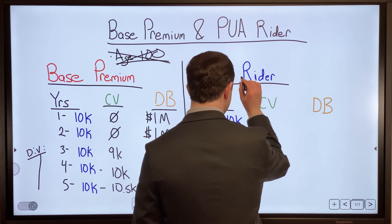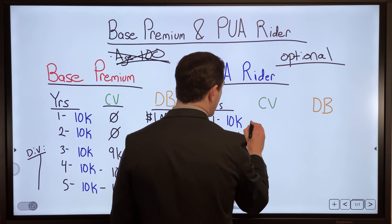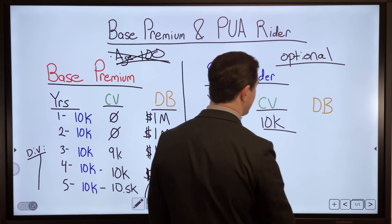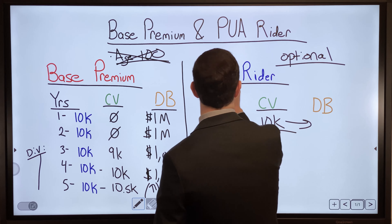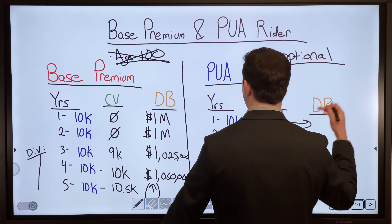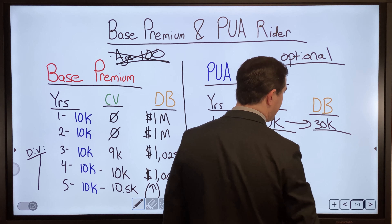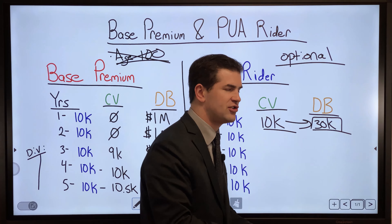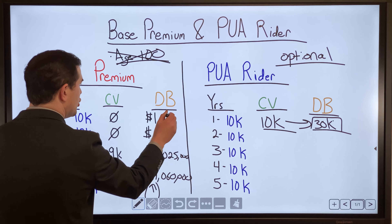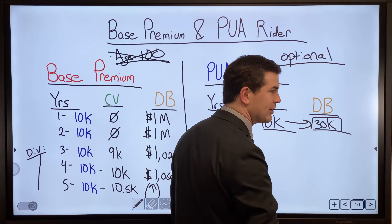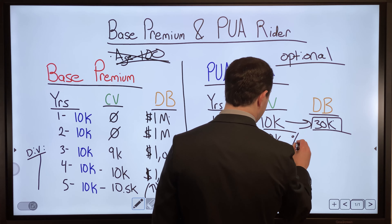The paid up additions rider, by contrast, is optional. When you pay $10,000 into the PUA rider, you immediately see roughly $10,000 in cash value — some companies may show $9,800, but let's keep it simple. That $10,000 buys paid up additional life insurance. The reason they use the term 'paid up' is that the base premium is due each year — it's not paid up — whereas the PUA payment is complete when made. Depending on your age, that $10,000 might add $30,000 in additional life insurance, added on top of the original $1 million.